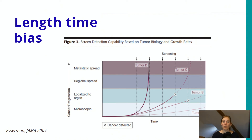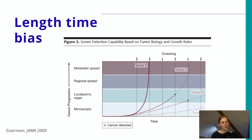So if you compare screen-detected tumors with interval tumors, you might conclude that interval tumors have worse mortality and therefore screening is very beneficial. But this is a form of bias that you cannot adjust for, because you don't know when the cancer started or how aggressively it has grown. This is a form of bias in screening studies that unfortunately cannot be adjusted for.